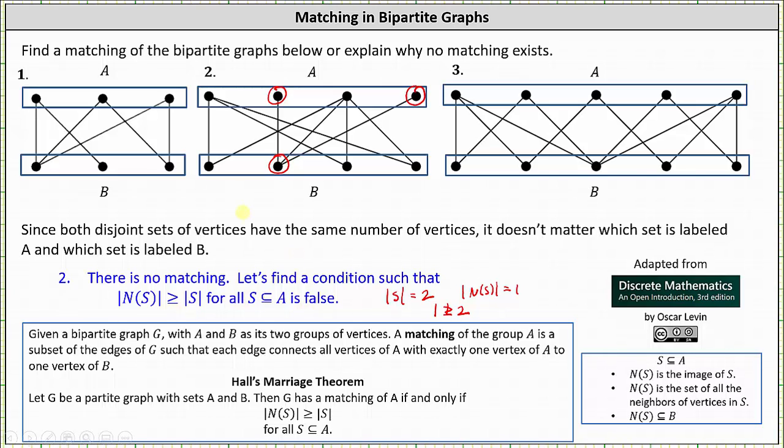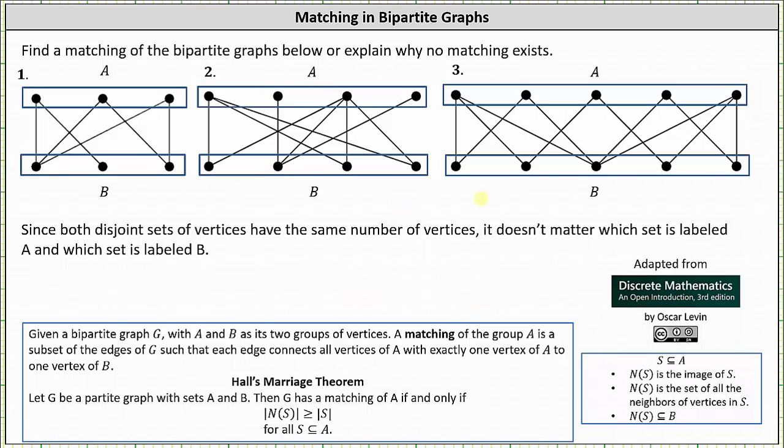And now let's look at the third example. Analyzing the graph, it looks like there are several matchings of A. Let's go ahead and find one. Let's connect the first vertex in A to the first vertex in B. Let's connect the second vertex in A to the third vertex in B. Let's connect the third vertex in A to the second vertex in B. And let's connect the fourth vertex in A to the fifth vertex in B. And let's connect the fifth vertex in A to the fourth vertex in B. This set of edges is just one possible matching of A. So our answer is yes, there is a matching of A.